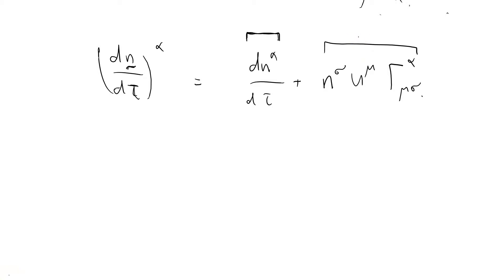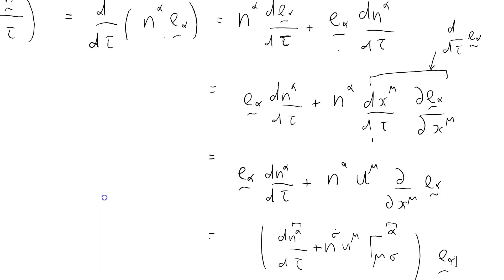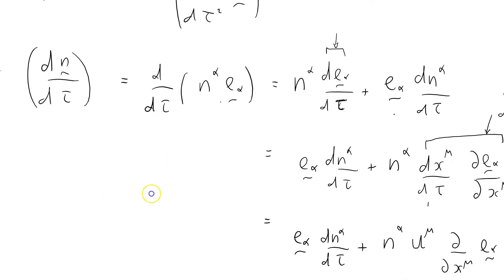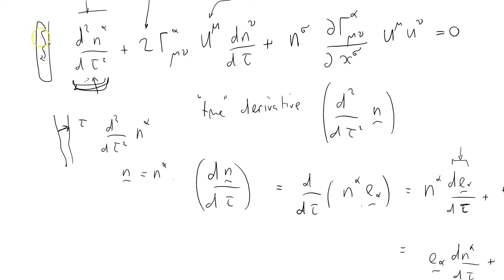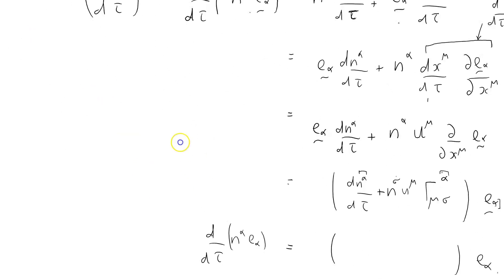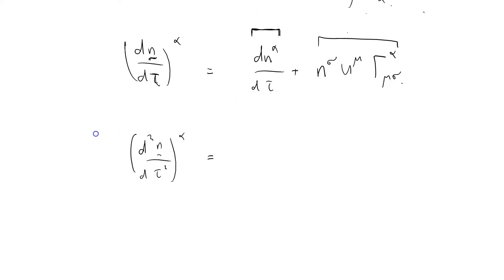Of course what I really want to do is to figure out the second derivative d2n by d tau squared component alpha. The reason I want this is that I'm going to go back eventually to use this equation here which used the physics of geodesics. So I'm going to link the mathematics to the physics using this formula.